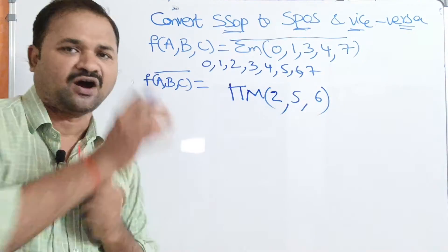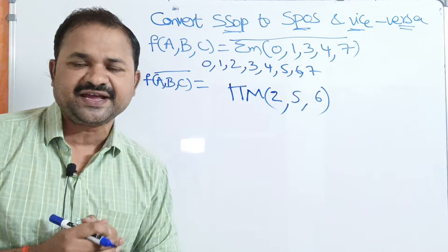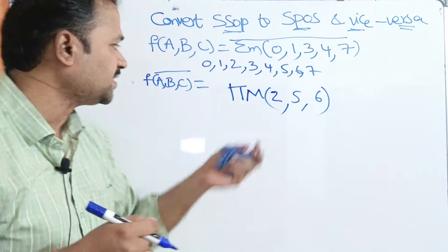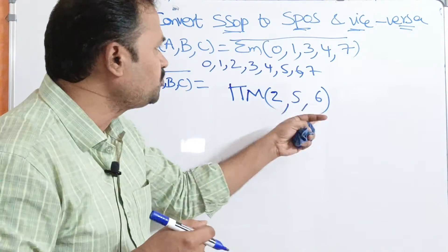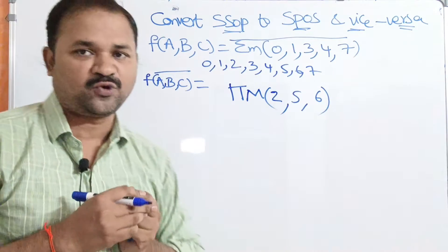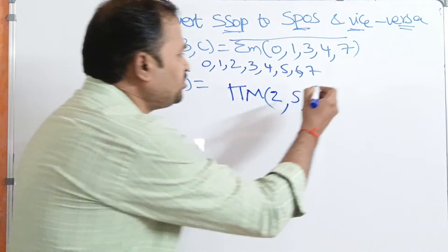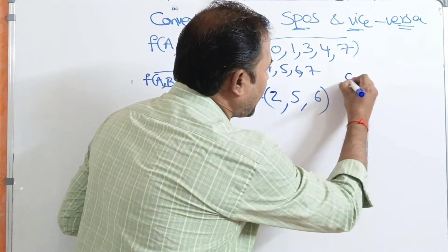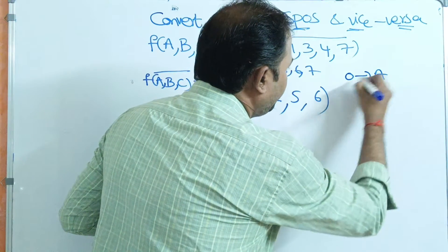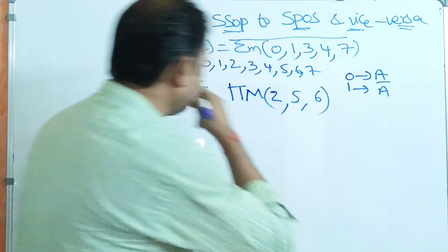So if we perform the complement operation on this expression, we will get pi capital M of 2, 5, and 6. This is the output here. If we want, we can write the output in terms of expression also. This output is in the form of SPOS — Standard POS. In standard POS, 0 means actual variable, and 1 means complement of the variable.